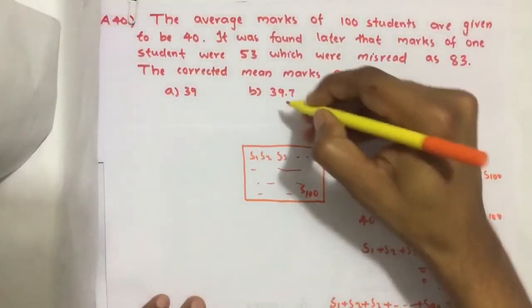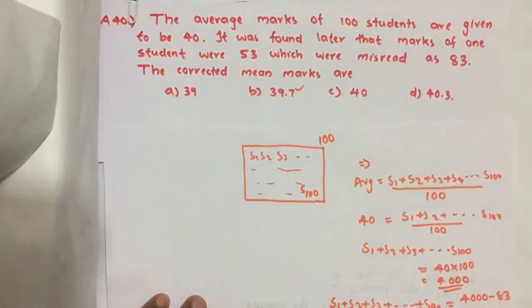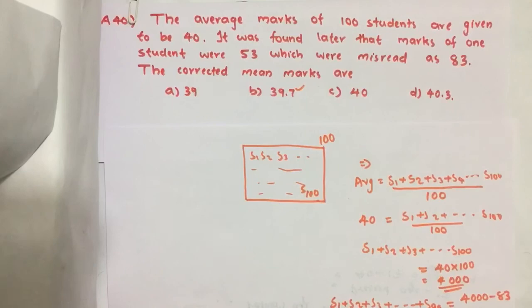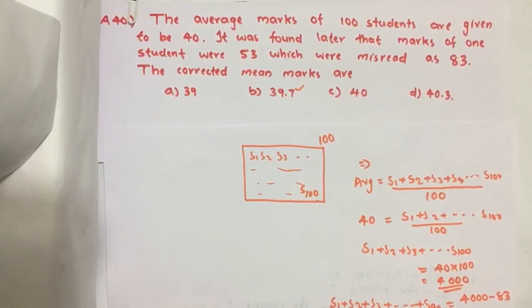So our answer is B, 39.7. If you have any suggestions, please do comment. Don't forget to like, share, and subscribe our channel. Keep supporting us. Jai Hind.